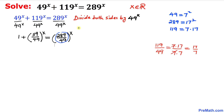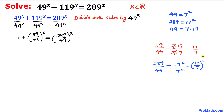Now let's simplify 289/49. We know that 289 is 17 squared and 49 is 7 squared, so this fraction can be written as (17/7) squared. Therefore our equation becomes 1 plus (17/7)^x equals (17/7 squared)^x.